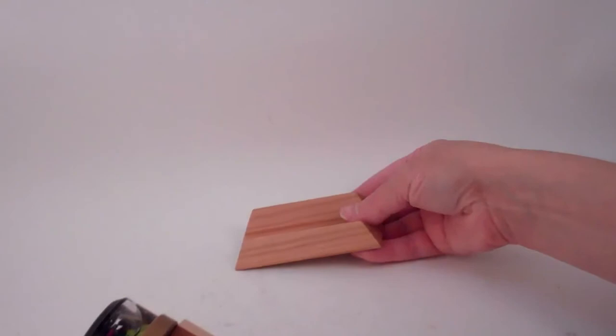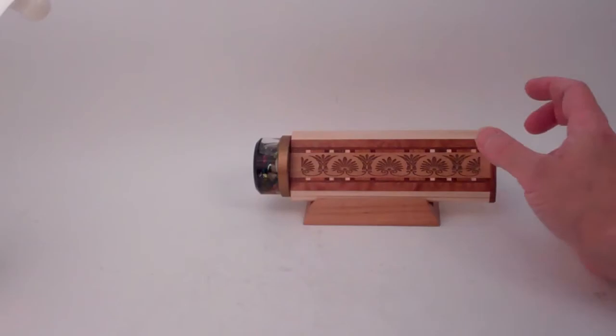The base that it comes with is solid western maple and the kaleidoscope rests upon the base at a lovely angle.